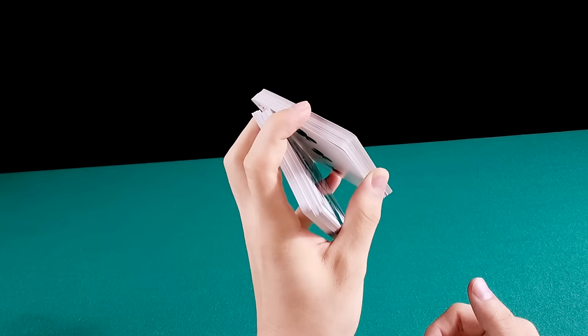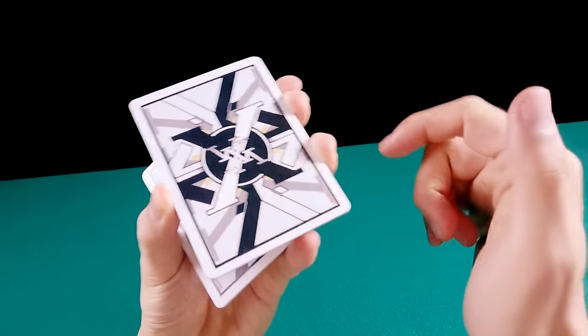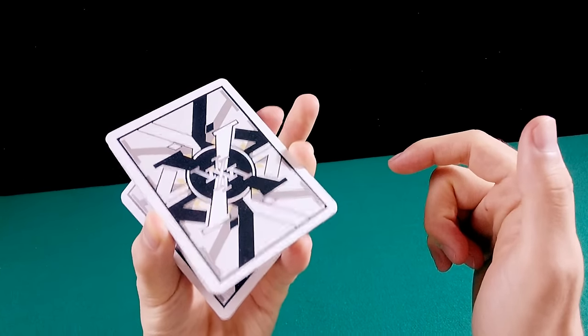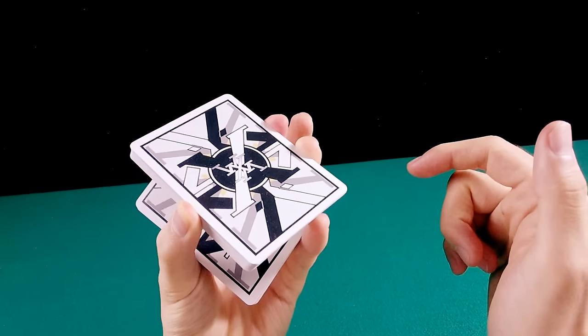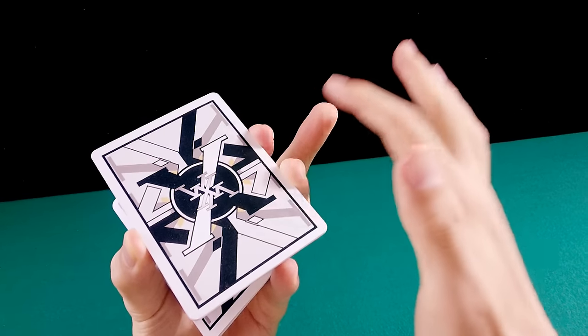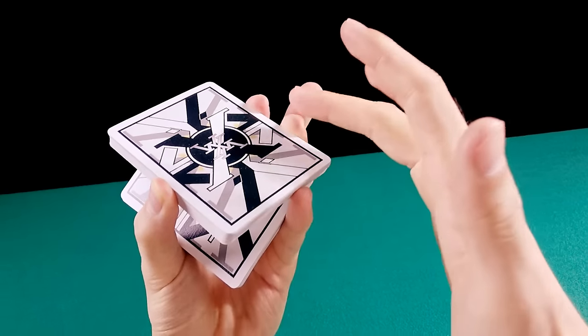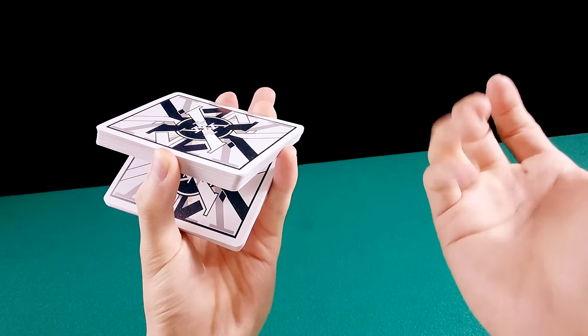O dedo indicador vai sair daqui e posicionar no lugar do dedo médio. O dedo médio vai sair e o indicador vai ficar no lugar do dedo médio. No momento que o indicador ficar no lugar do dedo médio, os três dedos - o médio, anular e dedo mínimo - vão abrir.